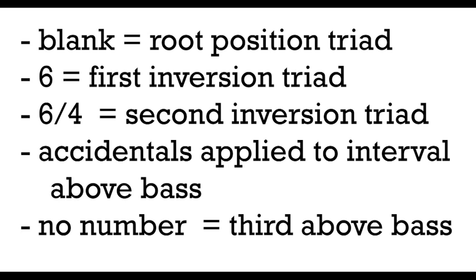A quick reminder on how those work. We remember that just like with our roman numerals, if we have no numbers that indicates a triad in root position. If we have the number six, we're indicating a first inversion triad. A triad that has a pitch a sixth above the bass note. It also has a pitch a third above the bass note, but lazy musicians don't write it out. And six four will indicate second inversion triads. Triads which have a pitch a sixth above the bass note and a fourth above the bass note. All of these numbers indicate the intervals above the bass.